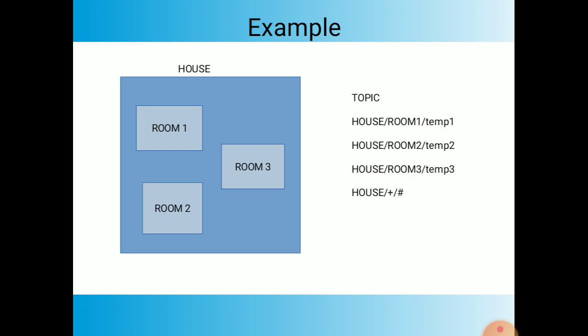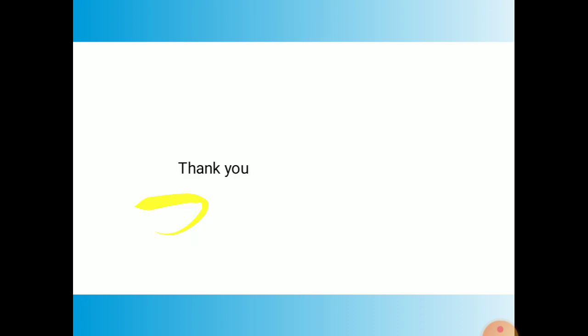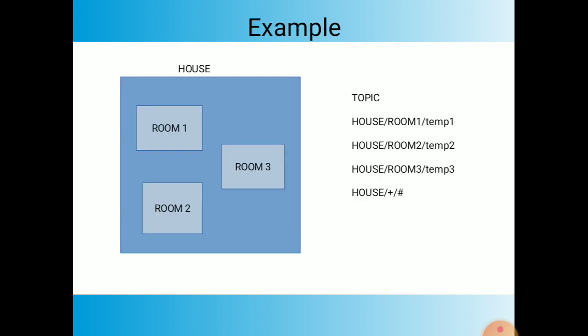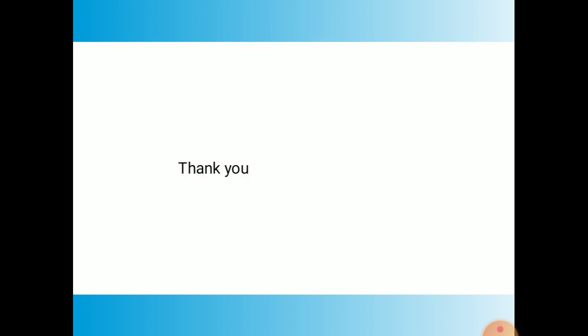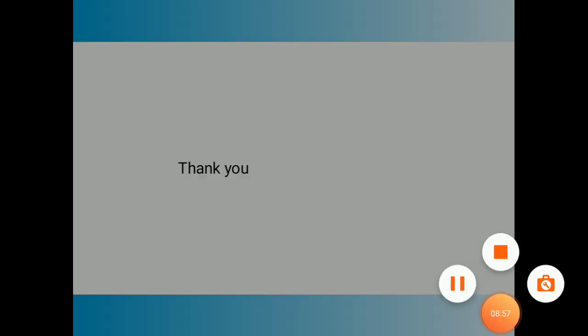Using house/+ selects all the sensors across rooms. For example, in room 1 there is humidity and temperature sensor; in room 2 and room 3 there are other sensors. The hash wildcard is used to select all sub-branches of MQTT. This is the complete working principle of the MQTT protocol. Thank you for listening, and please subscribe to my channel.